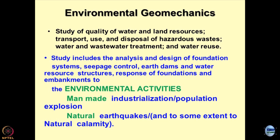The first category is manmade and the other is natural processes or natural calamities. The manmade activities would primarily be industrialization and population explosion, and once you talk about these issues, everything is part and parcel of this, including the scarcity of land which was discussed in the previous lecture.